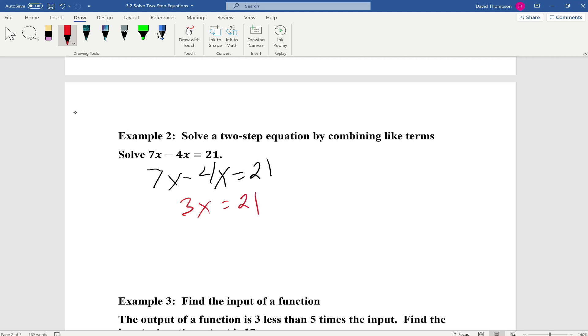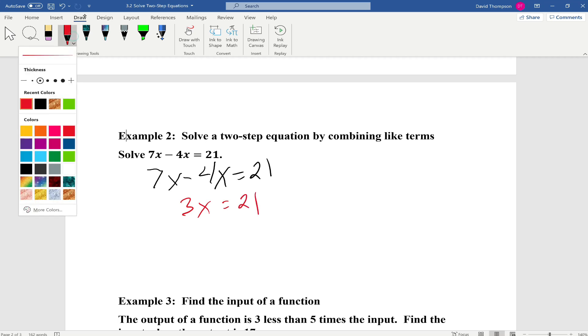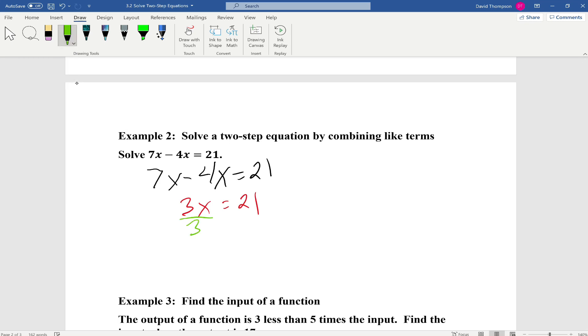Now we're in a position where we just have a one-step equation to solve. So we're going to divide both sides by 3. And x equals 21 divided by 3 is 7, and we're done.